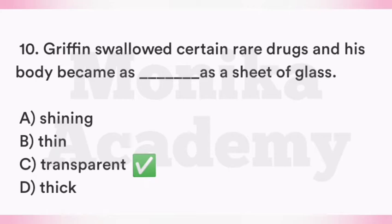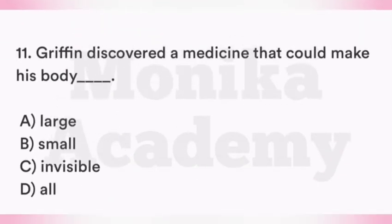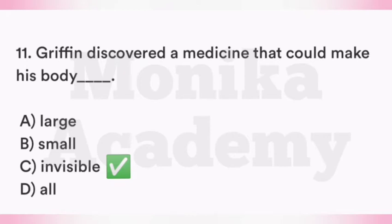Question 11: Griffin discovered a medicine that could make his body ___. Option A: Large. Option B: Small. Option C: Invisible. Option D: All. The correct answer is Option C, Invisible. Griffin ने एक ऐसी medicine discover की थी जिसको खाने के बाद body invisible यानि अदृश्य हो जाती थी.